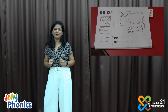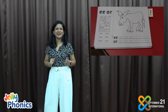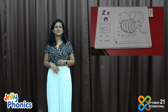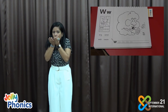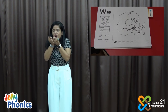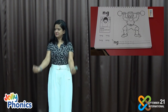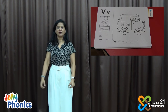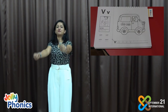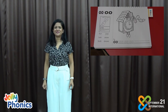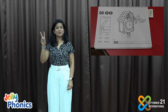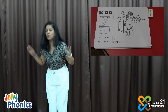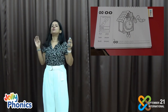Now we'll move to group number five and the first sound here is Z, then G, W, and V. Now there are two sounds and the actions are O, O, O, O.